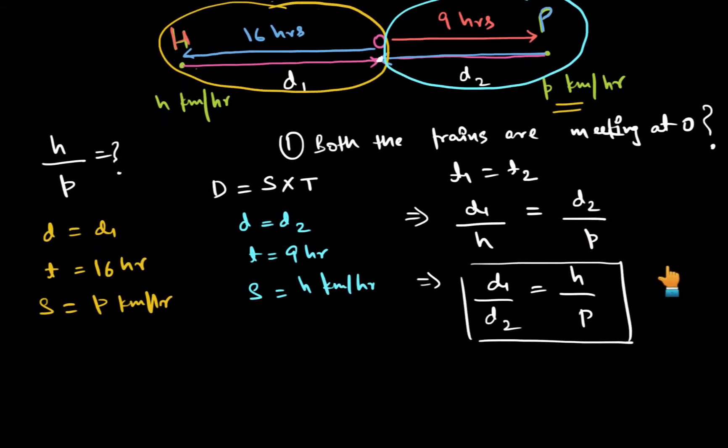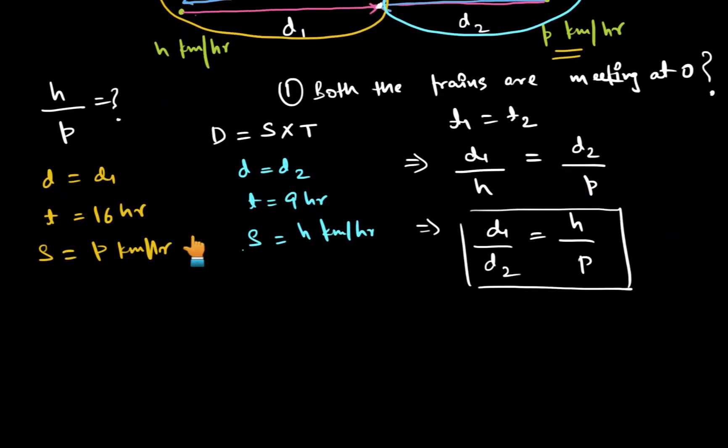Let's see what we can achieve from both these situations that we have just written down. So distance is equal to speed into time. So D1 would be equal to 16P and from here D2 would be equal to 9H. Let's substitute D1 and D2 in this first ratio that we just obtained. So D1 is 16P and D2 is 9H and this is equal to H upon P.